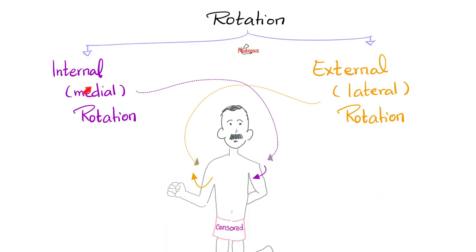Next, rotation. We have internal rotation and external rotation. Internal rotation has another name: medial rotation. External is also known as lateral rotation. External rotation is when the limb rotates away from the median plane, away from the core of the body. Medial or internal rotation is the exact opposite — rotation of the extremity towards the midline.